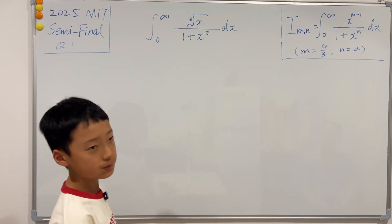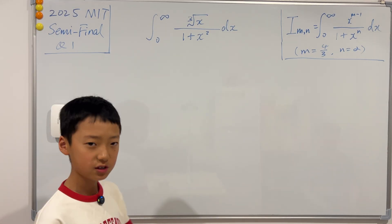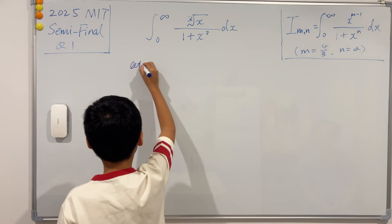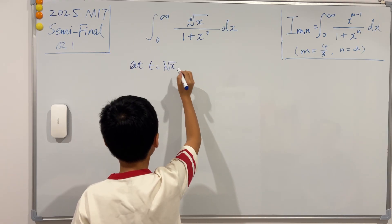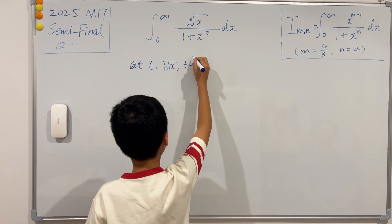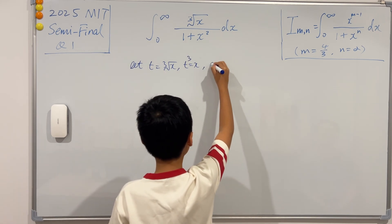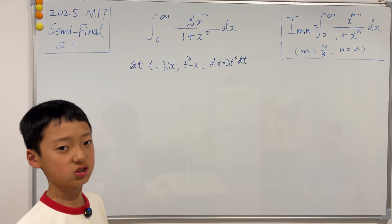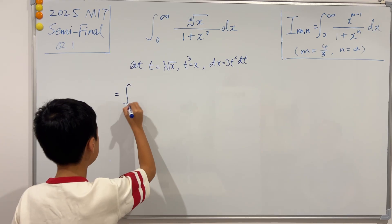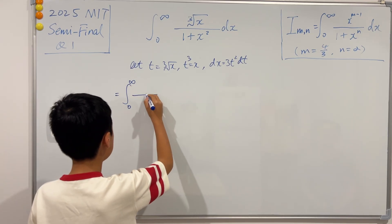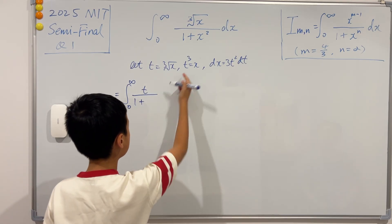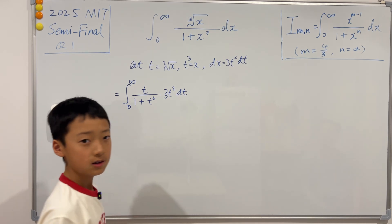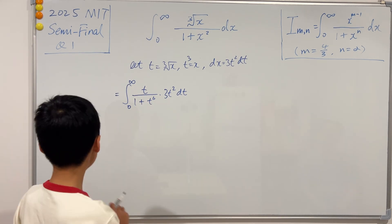The second way is the high school method. When you look at this integral, it's reasonable to let t be the cube root of x, so you don't have any fractional powers. So we let t = x^(1/3), meaning t³ = x, so dx = 3t² dt. The bounds don't need to change, so this is just equal to the integral from 0 to infinity of t over (1 + t⁶) times 3t² dt.